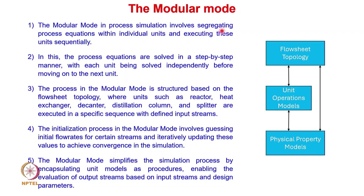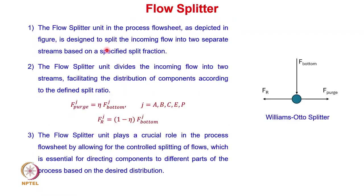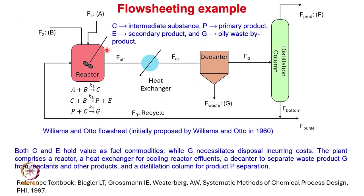Coming back to the modular mode: the modular mode in process simulation involves segregating process equations within individual units and executing them sequentially. Looking at the Williams-Otto flow sheet, there are five units: reactor, heat exchanger, decanter, distillation column, and splitter. All five units must be solved sequentially one after another.